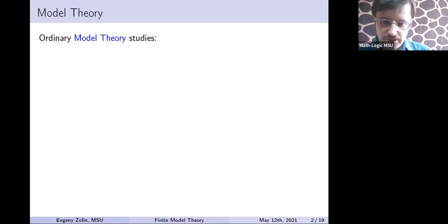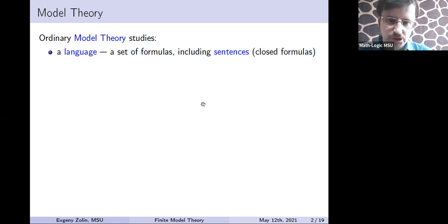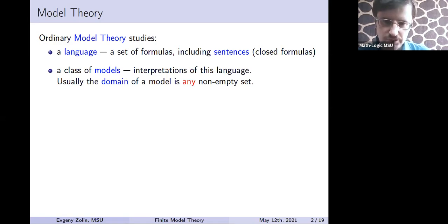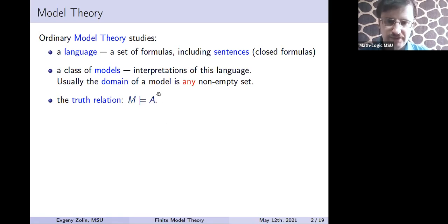In ordinary model theory, we study arbitrary models and formulas. We study two things: a language — in our case a set of formulas, mostly closed formulas or sentences — and on the semantic side, the class of all models including finite and infinite models, so the domain of any model is any non-empty set. The main bridge between the language and models is this truth relation between a model and a closed formula: a formula A is true in the model M.